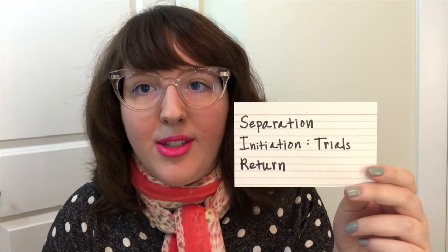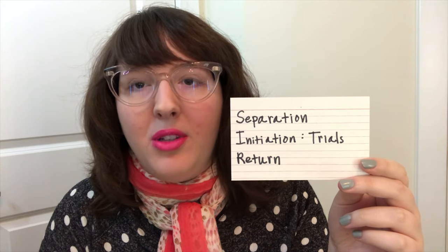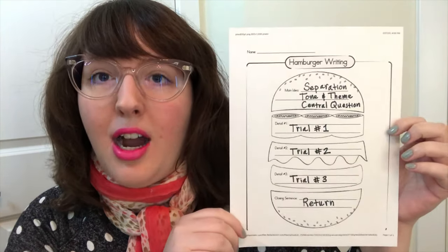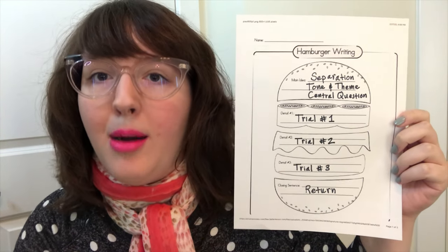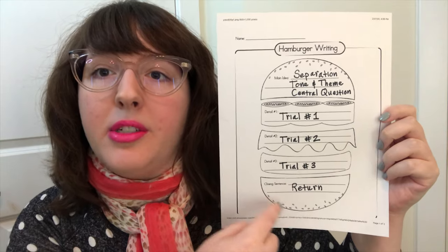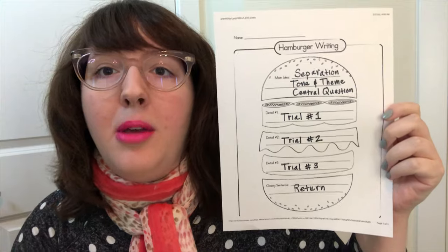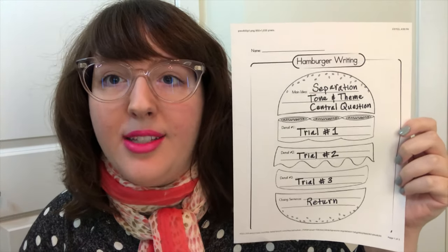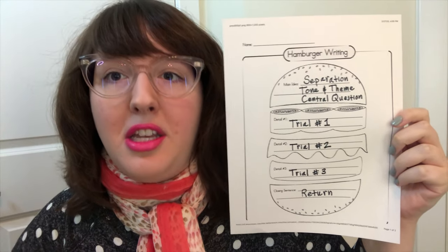I also apply this to everyday, everyman-type characters — whoever my main character might be. These three steps — separation, initiation, and return — fit really well into the hamburger model. Here's another copy of the hamburger model and you can see how the top bun is separation, the lettuce, tomato, and burger are the different trials your hero goes through, and the bottom bun is the return. These two ideas — beginning/middle/end, the hamburger model, and the hero with a thousand faces — are all saying the same thing in a different way, and hopefully will help inspire you to continue writing your story.